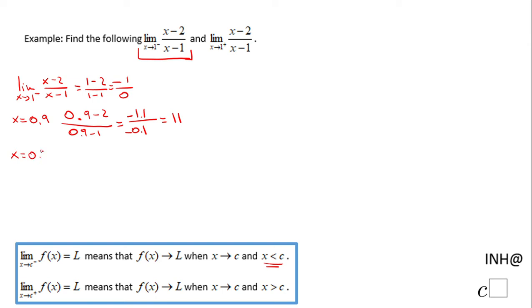Let's go even closer to 1, like x equals 0.99. I'm going to have a similar expression: 0.99 minus 2 over 0.99 minus 1. This is going to be negative 1.01 over negative 0.01. If we do the division, we're going to get 101. Notice once I get closer and closer to 1, the value I get out is larger and larger.